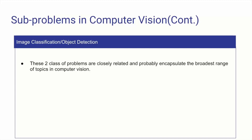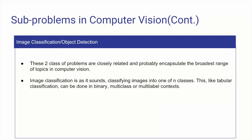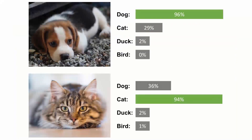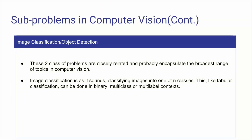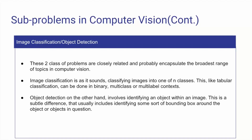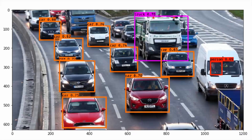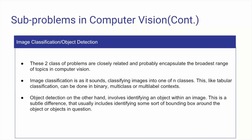One of the subproblems is image classification and object detection — probably the foremost problem still in computer vision. Image classification is classifying images into one of any number of classes, which can be done in binary, multi-class, or multi-label contexts. Object detection is subtly different: instead of classifying the whole image, we're identifying whether a certain object is present, normally via a bounding box around the detected object.